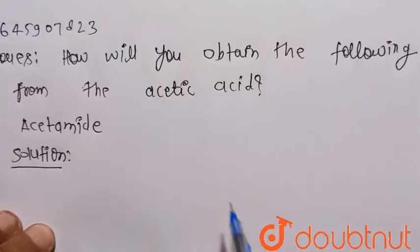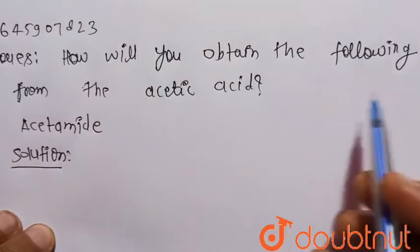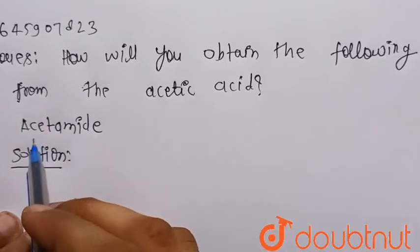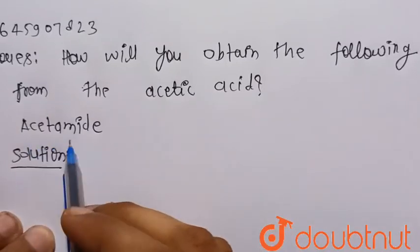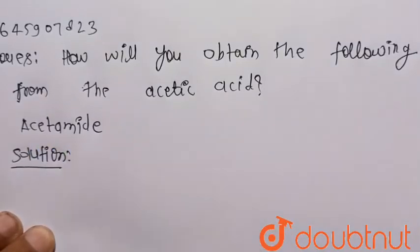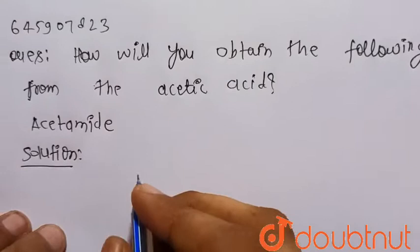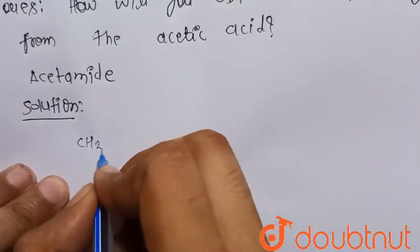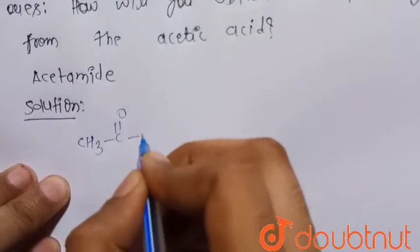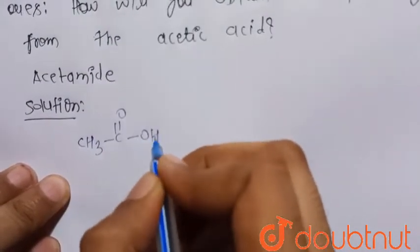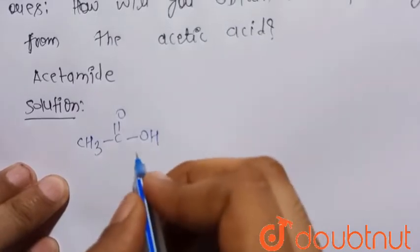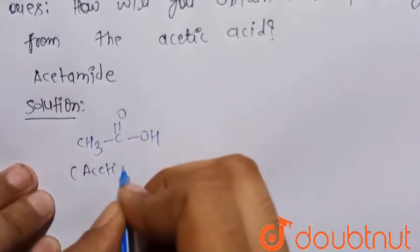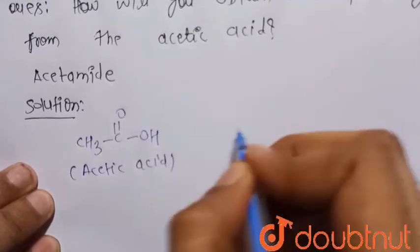Hello everyone. Consider the given question: how will you obtain the following from acetic acid? We have to obtain acetamide from acetic acid. We know that acetic acid is CH₃COOH, also called ethanoic acid. This is the acetic acid.